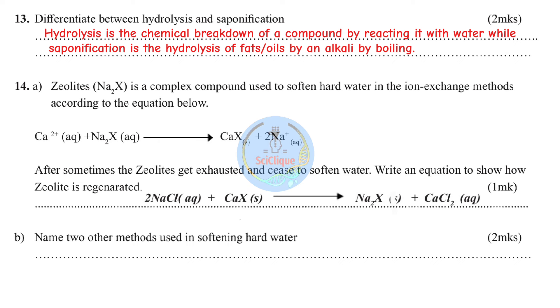Name two other methods used in softening hard water: boiling, and addition of sodium carbonate or ammonia.